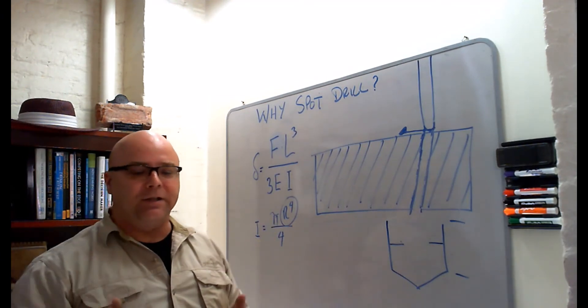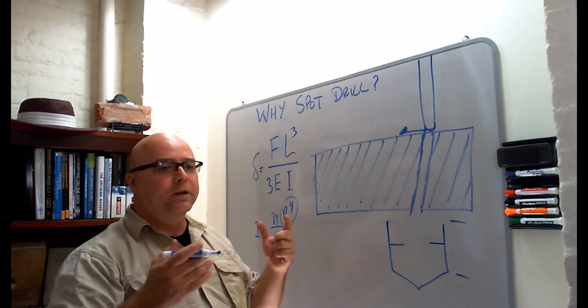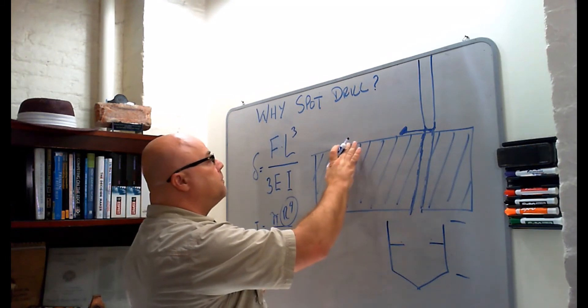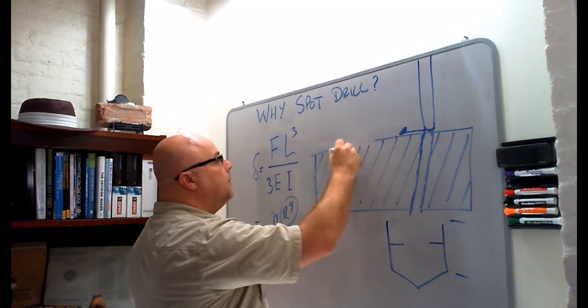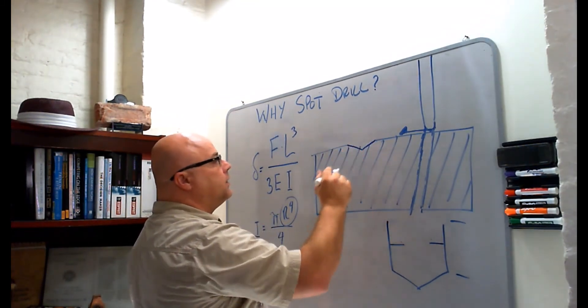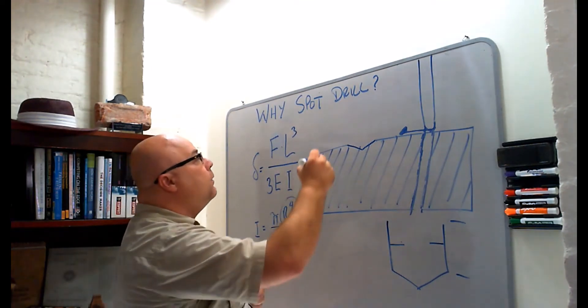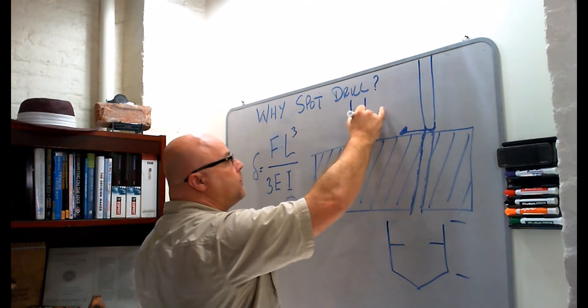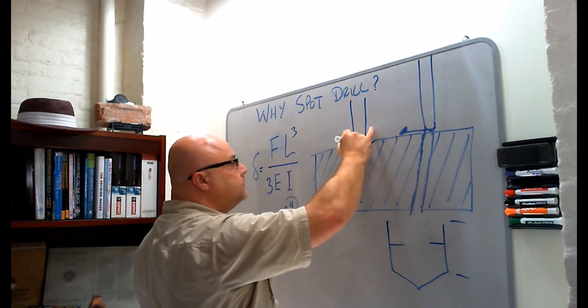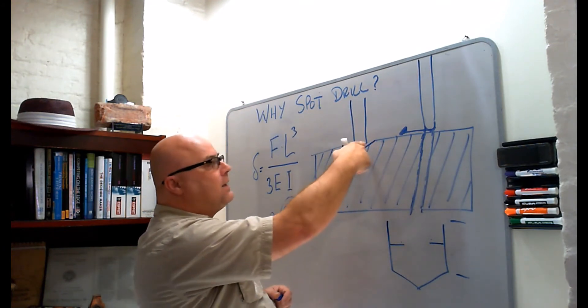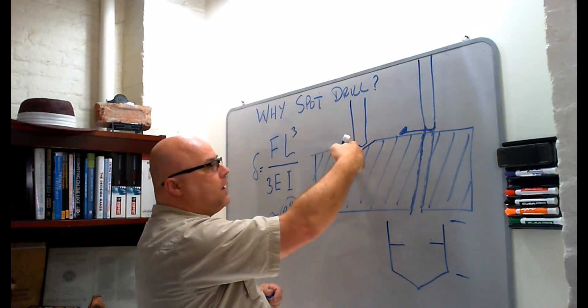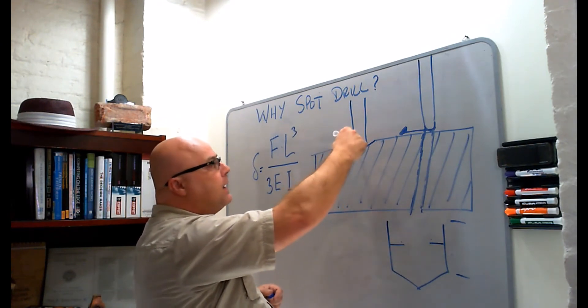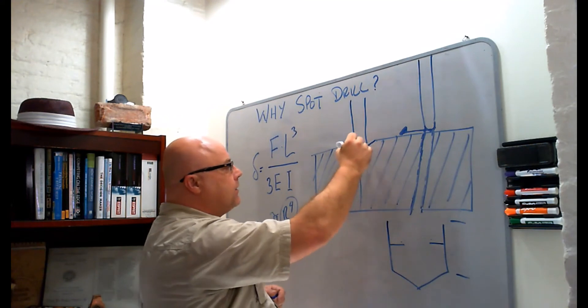So we'll come in with a spot drill, which is basically just a short stubby drill. There's different designs for them, but a spot drill will then make a mark on the top of the part like this. When our drill comes in now, even though our spot drilling operation won't be perfect either, when one side comes in contact, it's going to push the drill up against the other side, which is going to push back on it, and it's going to tend to guide the drill.